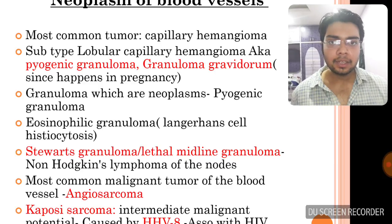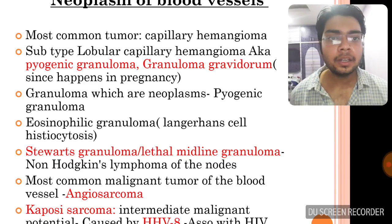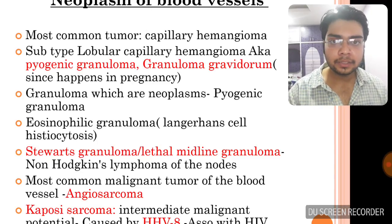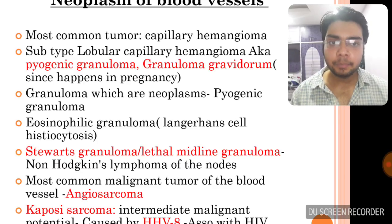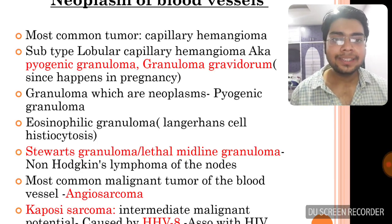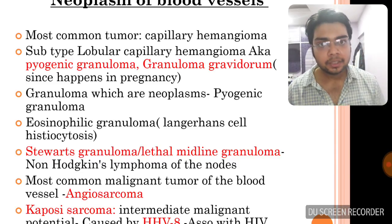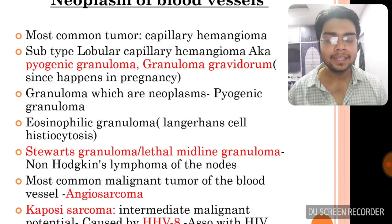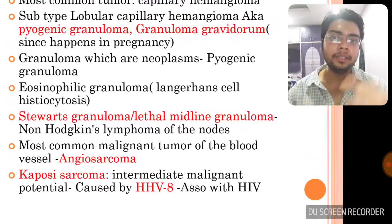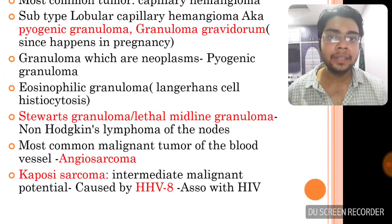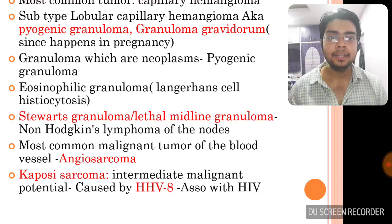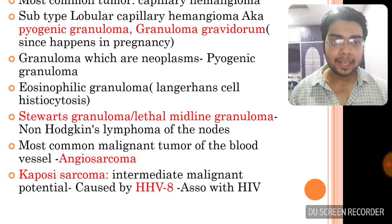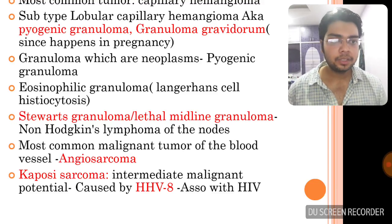Granulomas that are neoplastic include pyogenic granuloma; eosinophilic granuloma is seen in Langerhans cell histiocytosis. Lethal midline granuloma is associated with non-Hodgkin lymphoma of the nose — this is rare but important. The most common malignant tumor of blood vessels is angiosarcoma. Kaposi sarcoma, very frequently asked, is caused by HHV-8, has intermediate malignant potential, and is associated with HIV.